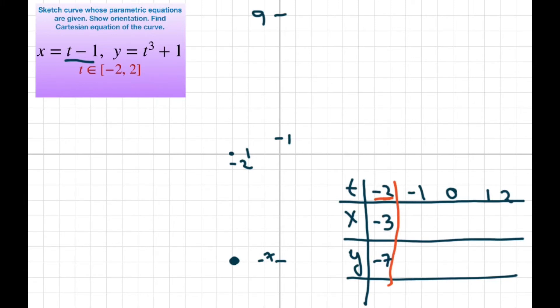Now at negative 1, our x is going to be negative 2 and our y is 0. So then we're going here. So the movement is going, starting down here and we're moving up this way. So there's your orientation there.